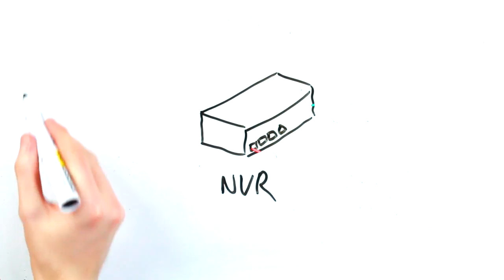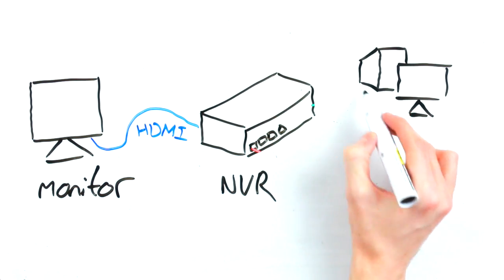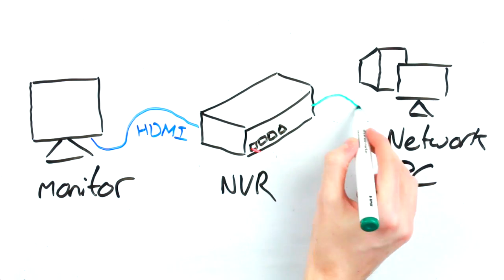Recording playback and other settings on an NVR can be controlled either locally by connecting a monitor to your NVR and operating it as an all-in-one computer, or remotely by connecting the NVR to a network PC.